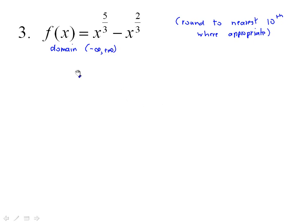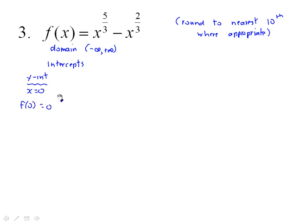Look for some of the other things that are happening — the intercepts is an interesting one algebraically. For the y-intercept, when we set x equal to 0, we get f(0) = 0 to the 5/3 minus 0 to the 2/3, which is just 0 minus 0. So f(0) = 0.